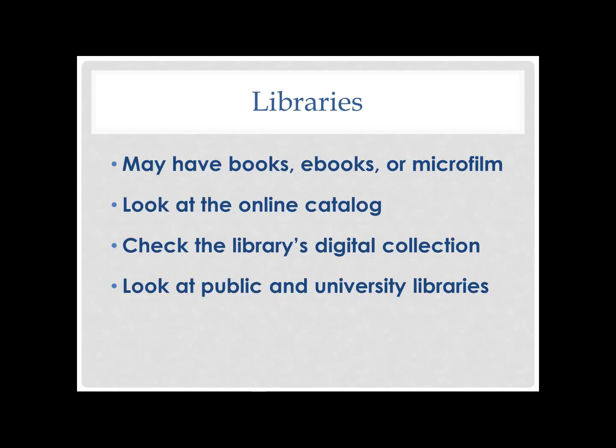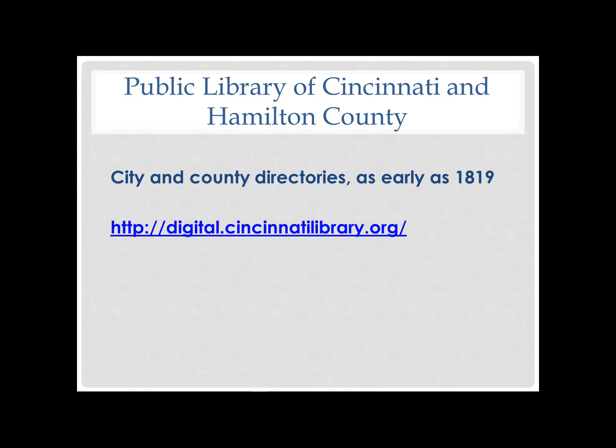Libraries may have books, ebooks, or microfilm containing city directories. Look at the online catalog, check the library's digital collection, and look at both public and university libraries in the area where your ancestor lived. The Public Library of Cincinnati and Hamilton County has a wonderful collection starting in 1819, with PDF versions downloadable to your computer. Searching and browsing is much faster after downloading the entire directory than looking online, so download the directories where you can.